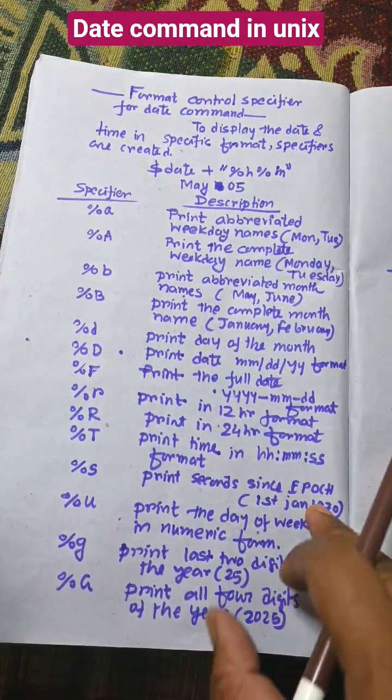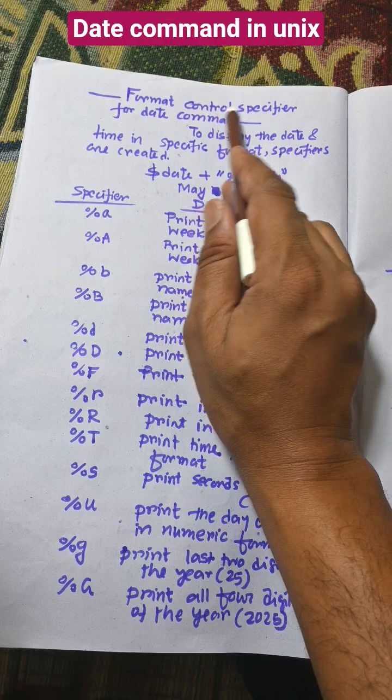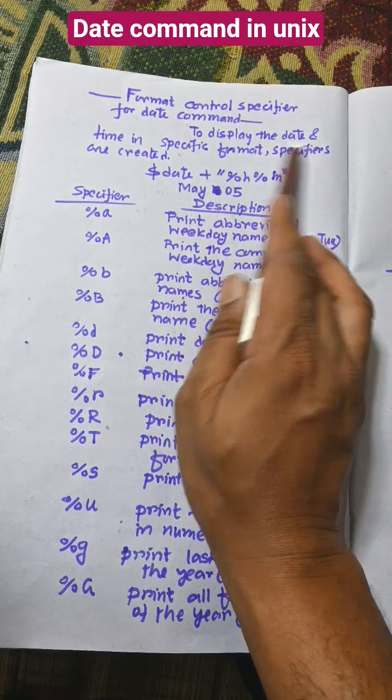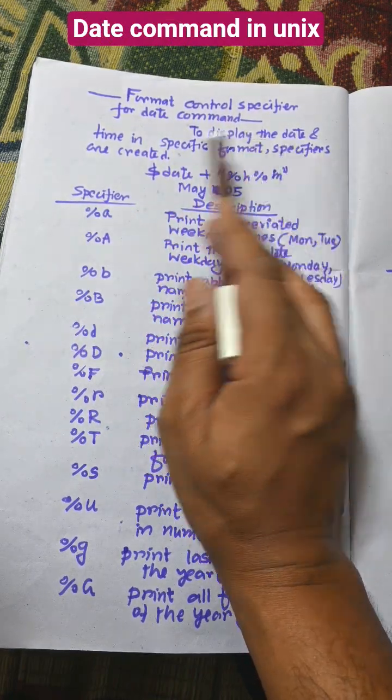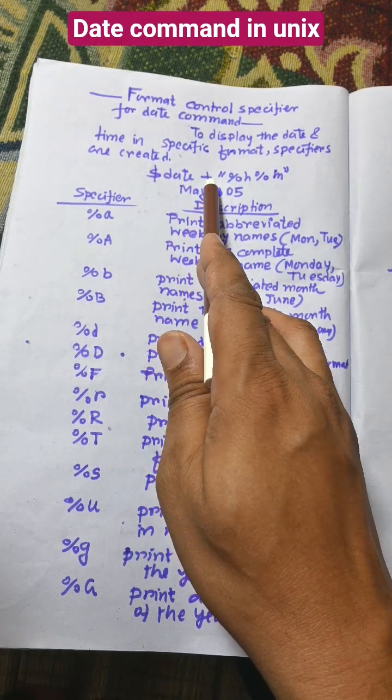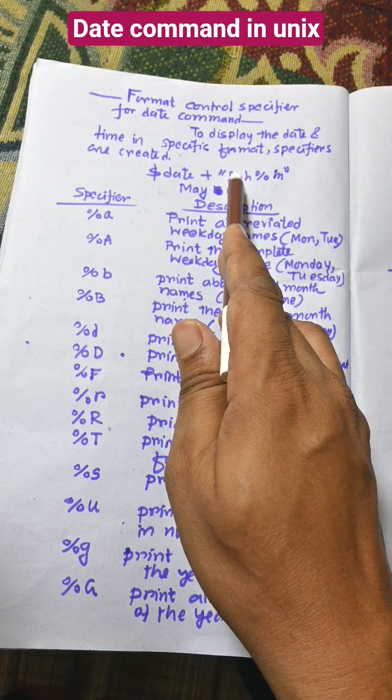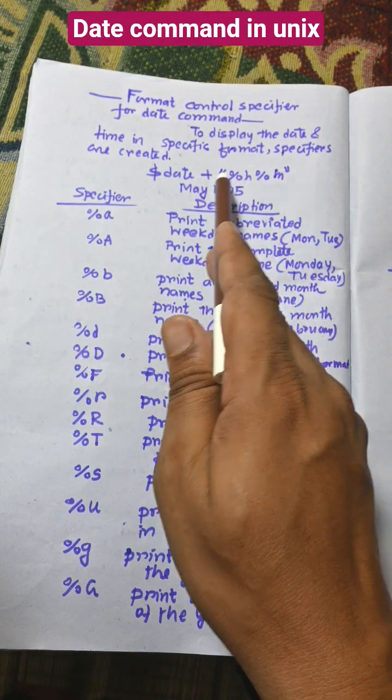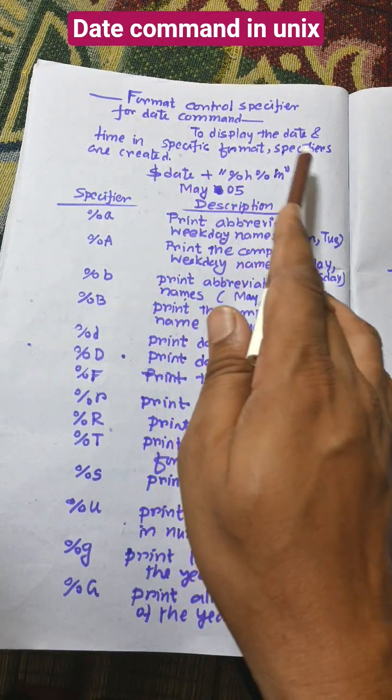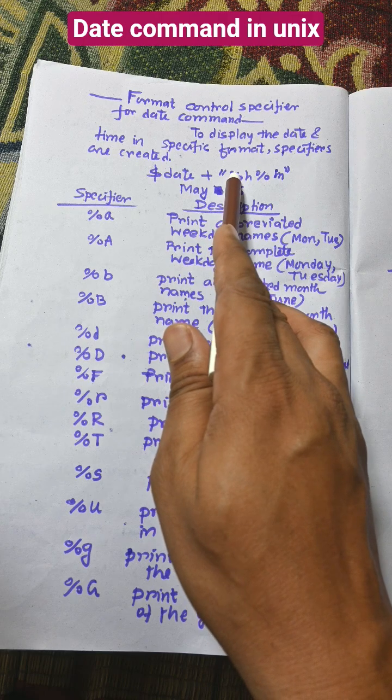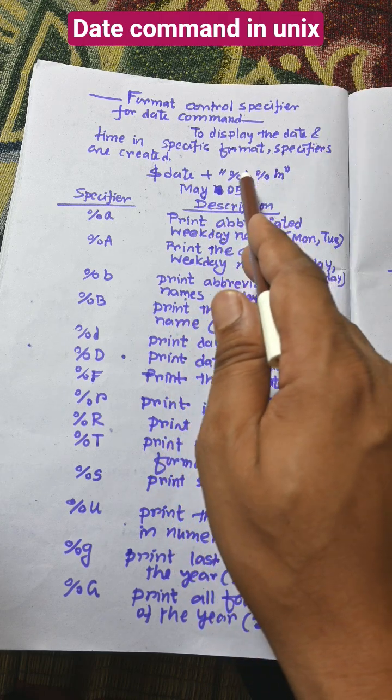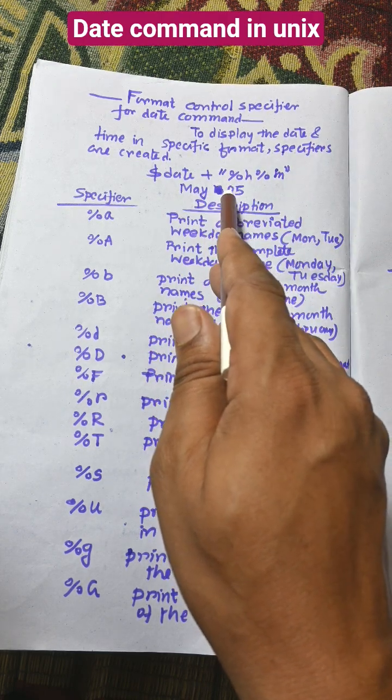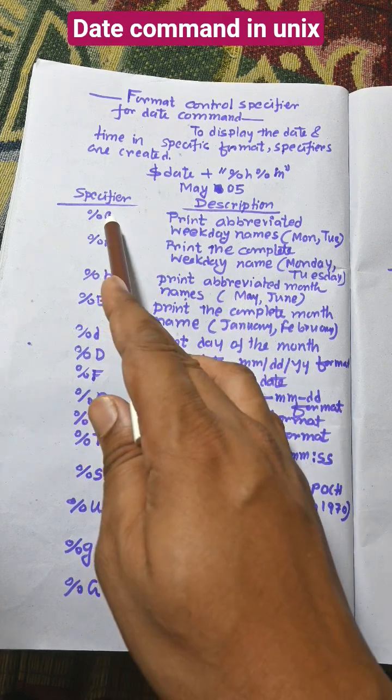Now, different format specifiers of the date command. Format specifiers for date command allow you to display the date and time in specific formats. For example, $date +%h %m will display May and 5.